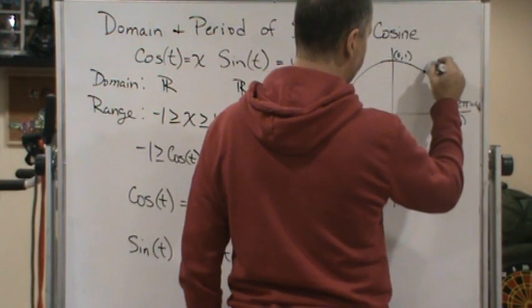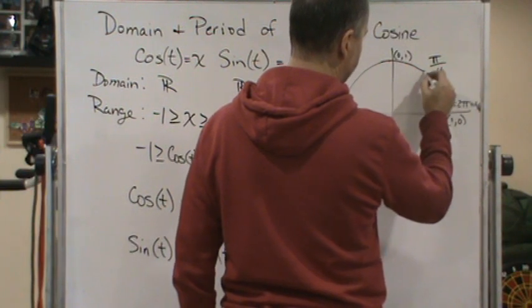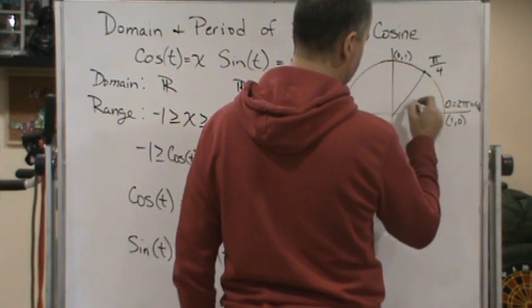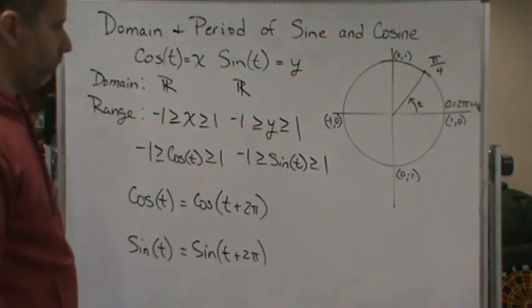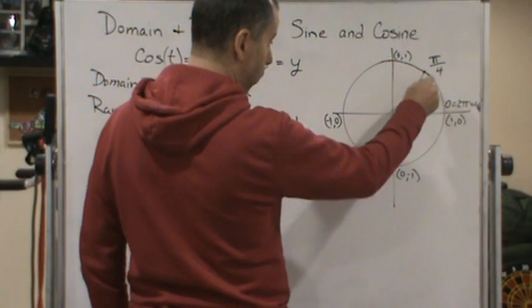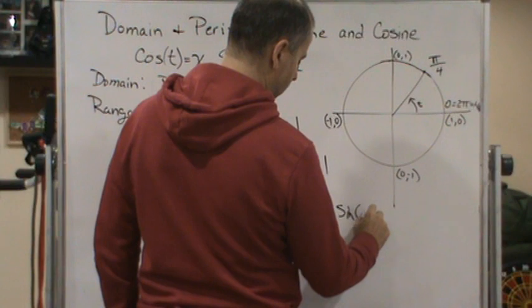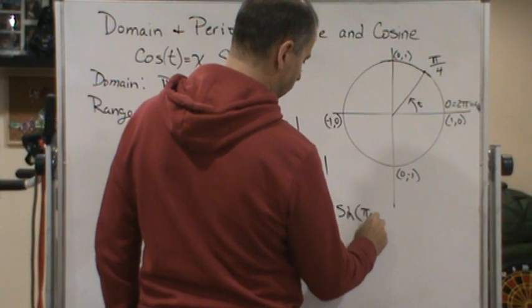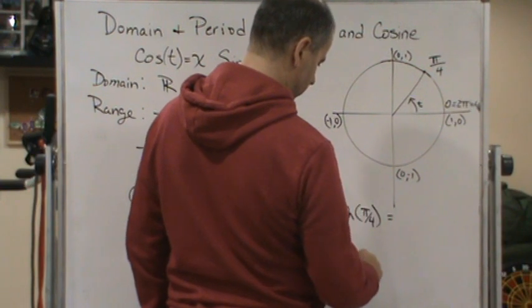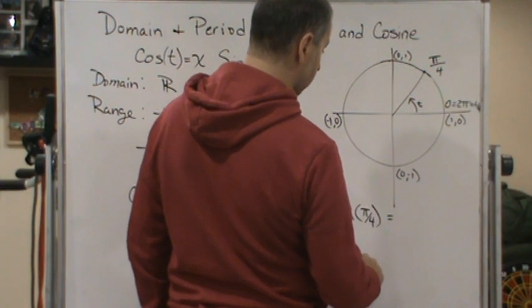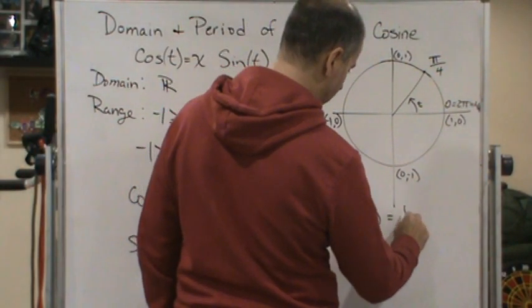If I go to π over 4, right, this point here, well, if I go one revolution, well, that means sine of, let's say, sine of π over 4, which is y, right, which is going to be 1 half.